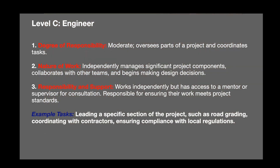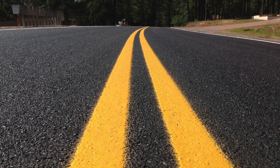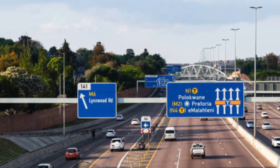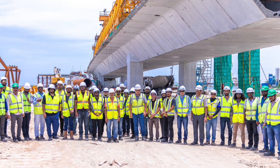Moving to level C, your title will be engineer, with a moderate degree of responsibility. You will oversee parts of the project and coordinate tasks. You independently manage significant project components, collaborate with other teams, and begin making your own decisions, including design decisions. You work independently but have access to a mentor and supervisor for consultation, and you are responsible for ensuring the work meets project standards. Example tasks include leading a specific section of the project such as road grading, coordinating with contractors, ensuring compliance with local regulations, and communicating effectively with team members.